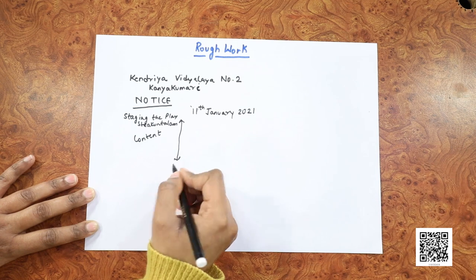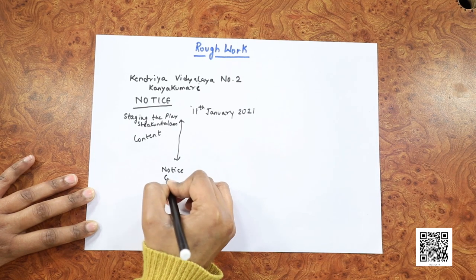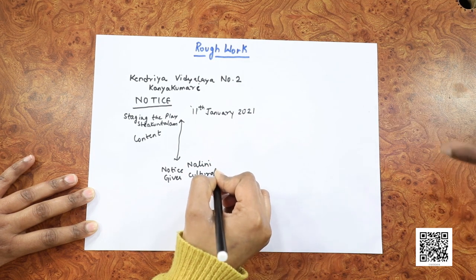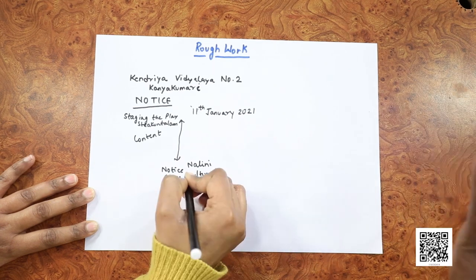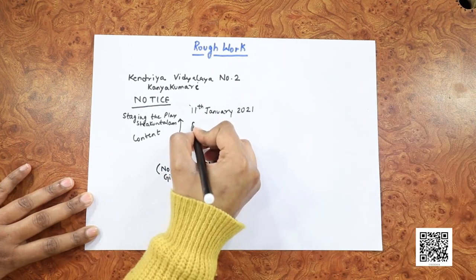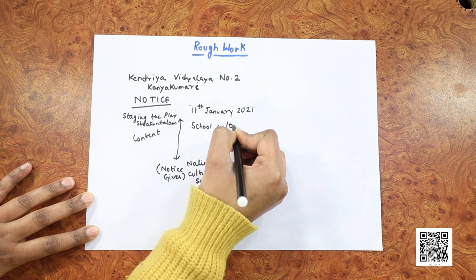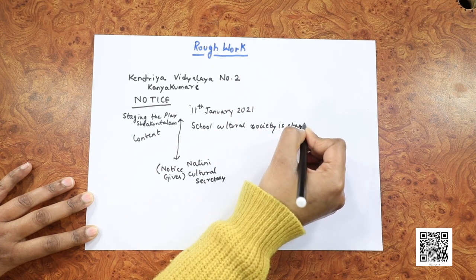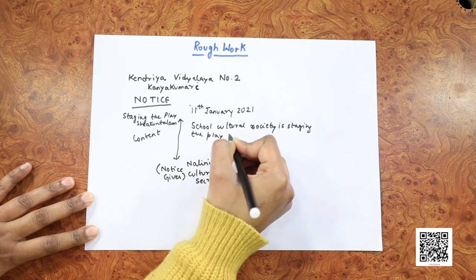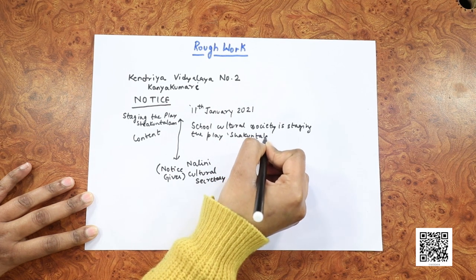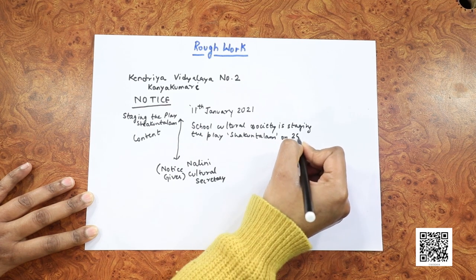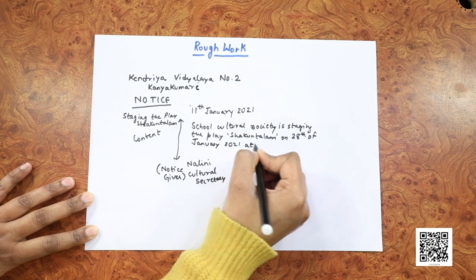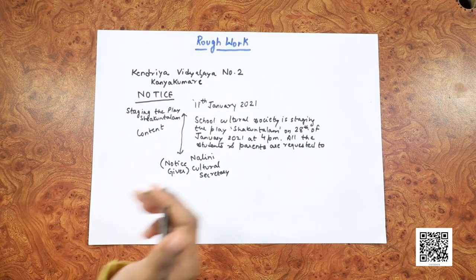Now write the body also. I can say: 'School cultural society is staging the play Shakuntalam on 28th of January.' Krithi and learners, I think the rough work has brought in everything. Krithi has included the headings, the event heading, the body of the notice, and the notice giver. Now let us write the fair and final work. In case of any query, please contact the undersigned. Who is the undersigned? Sir, the undersigned here is Nalini, Cultural Secretary.